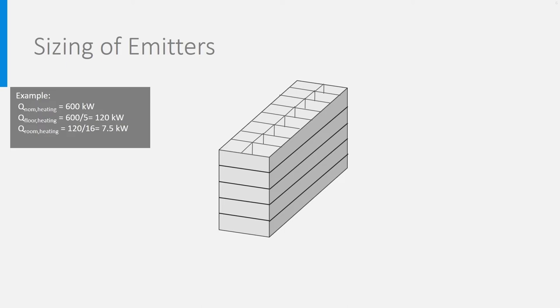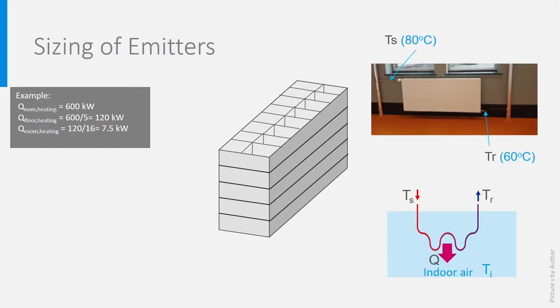How large should the radiators be? Let's now look at the energy delivered by emitters and study it on the example of a radiator. It would be exactly the same for floor heating. Let's call the temperature of the water entering the radiator at the supply side TS and the temperature of the water leaving at the return side TR. You see them on the picture.